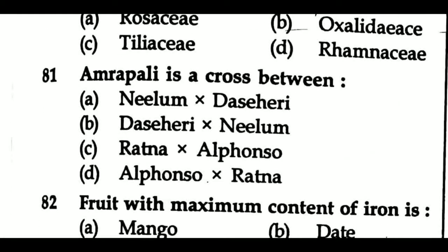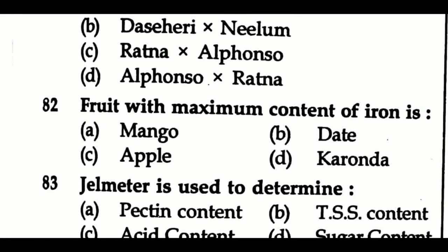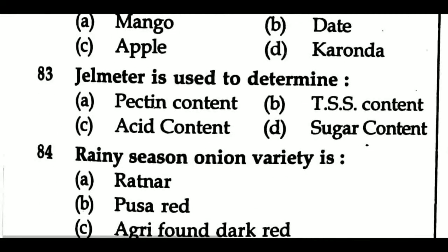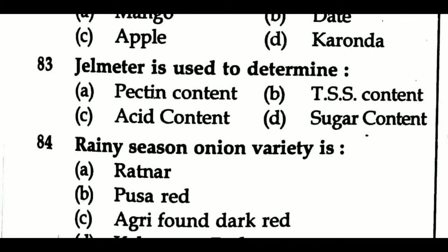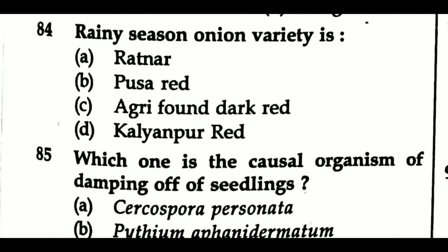Question 81: Amrapalli is a cross between — Option A: Neelam × Dashehari, Option B: Dashehari × Neelam, Option C: Ratna × Alphonso, Option D: Alphonso × Ratna. Question 82: Fruit with maximum content of iron is — Option A: mango, Option B: date, Option C: apple, Option D: karonda. Question 83: Gel meter is used to determine — Option A: pectin content, Option B: TSS content, Option C: acid content, Option D: sugar content. Question 84: Rabi season onion variety is — Option A: Ratnakar, Option B: Pusa Red, Option C: Agrifound Dark Red, Option D: Kalyanpur Red.